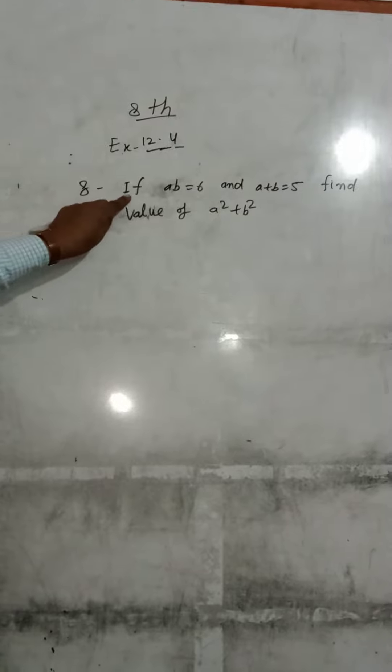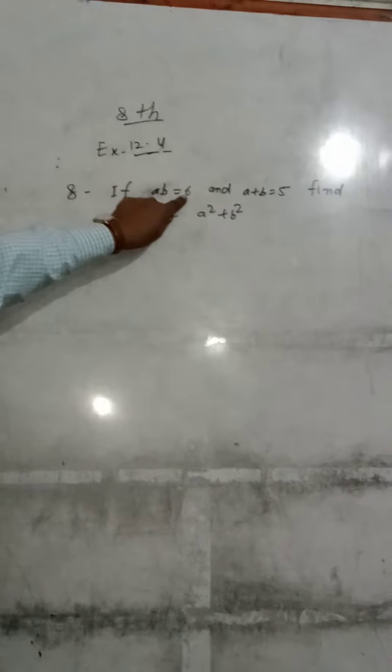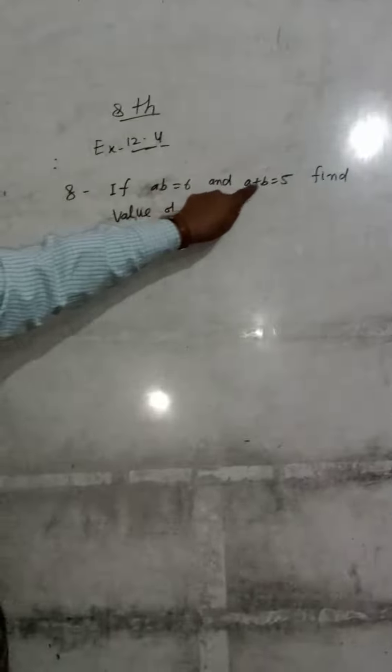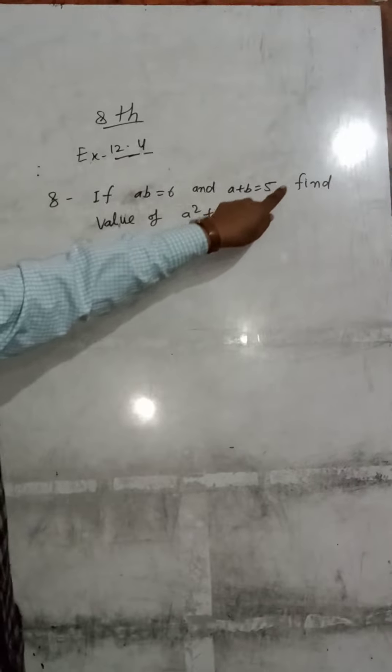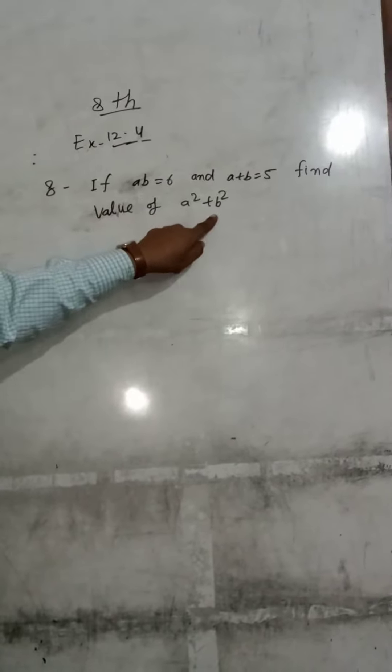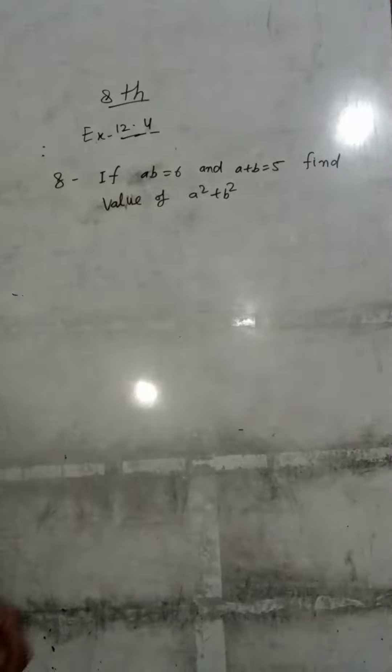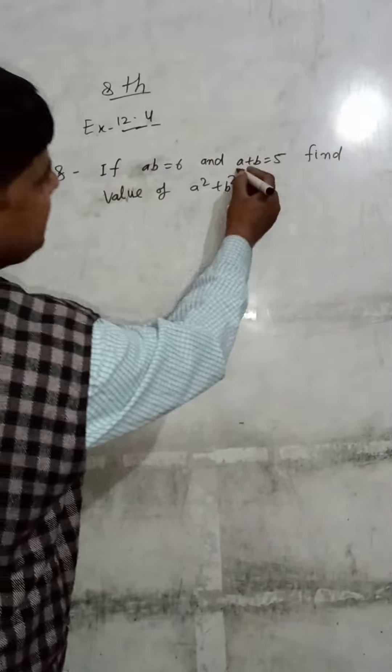If A times B equals 6 and A plus B equals 5, find the value of A squared plus B squared. We will solve this, we will do this work.